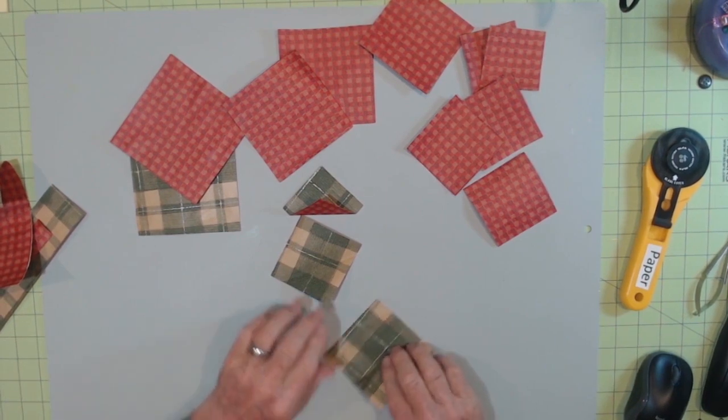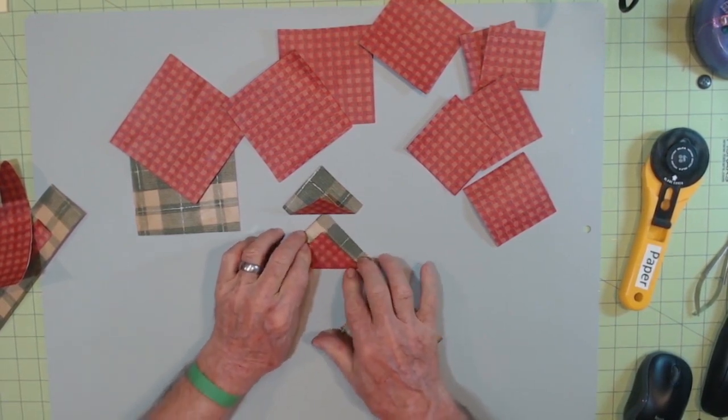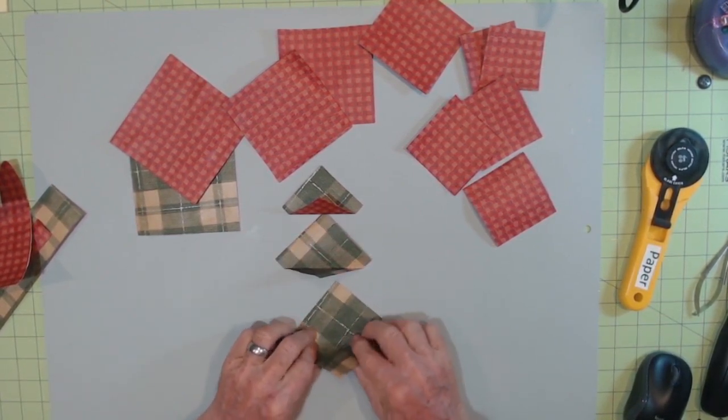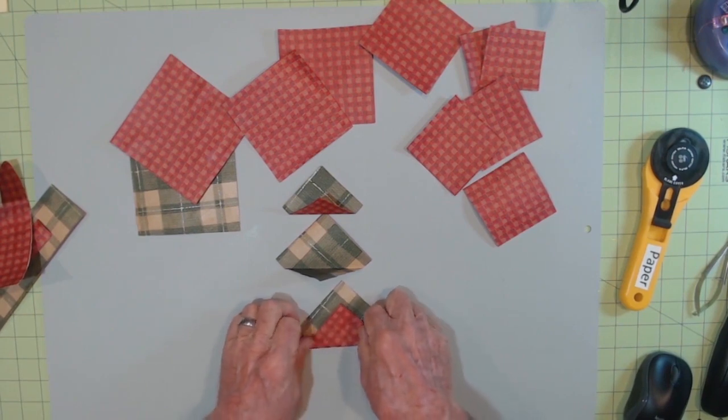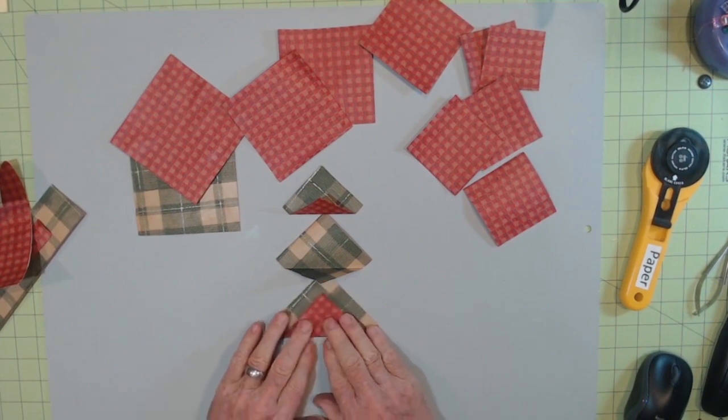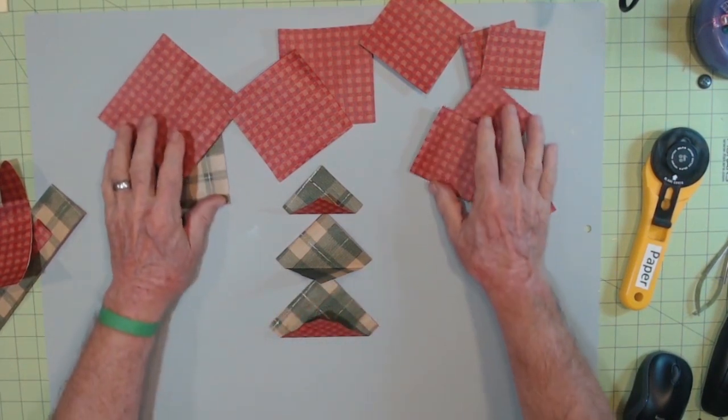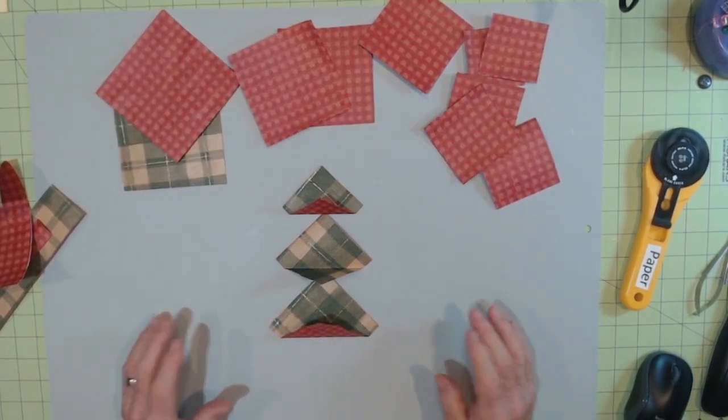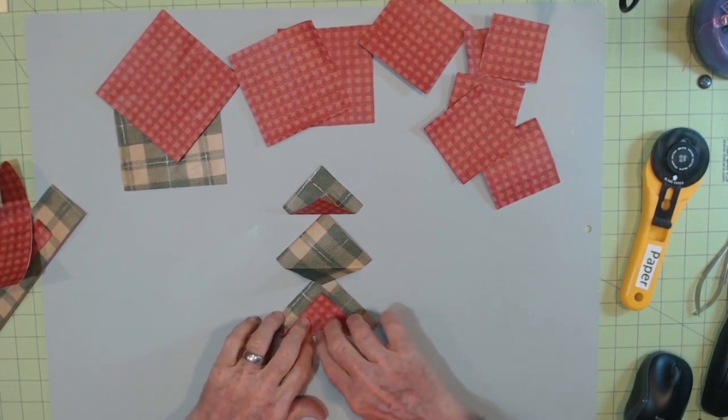And here again, don't make the mistake I almost made. You put the complementary side up. And basically we have a tree. It doesn't look like a tree just yet, but it will be.